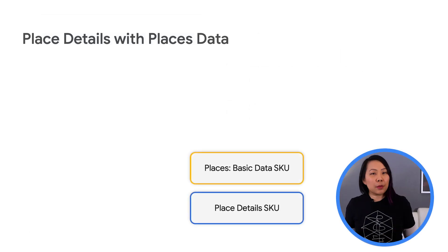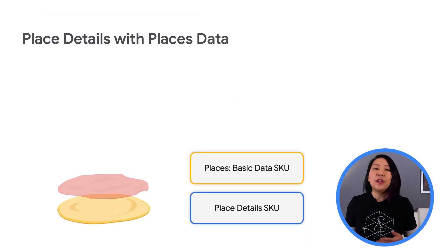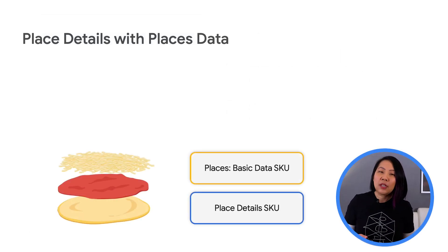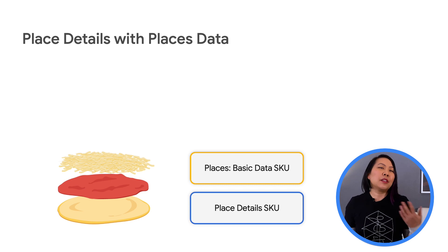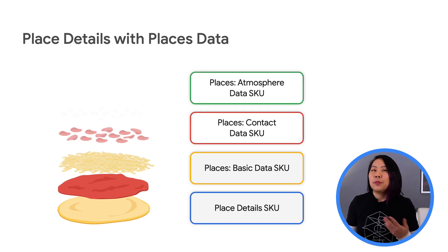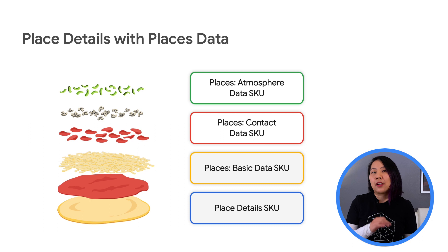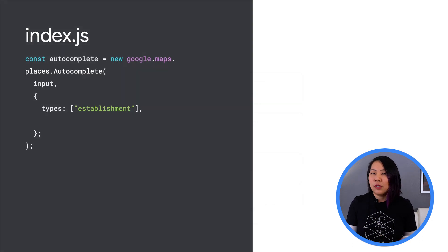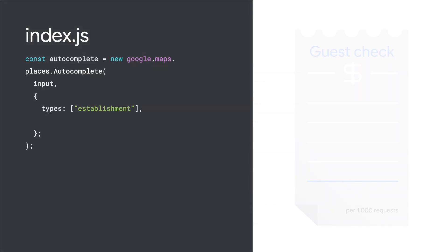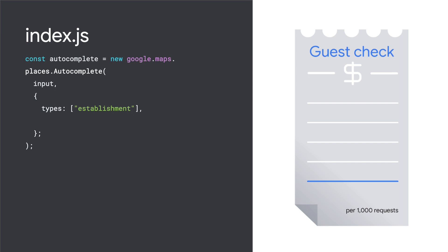It's like ordering a pizza with toppings. Fields in the basic category are included in a place details request — those are like cheese and sauce and don't result in any additional charge. The place details request is the base, and the contact and atmosphere data are the toppings that cost extra. If you don't specify fields in the place details request, all data charges are triggered, like ordering a pizza with everything on it. If you just want plain cheese pizza, why pay for the combo?